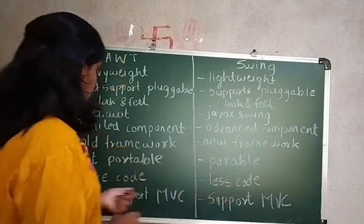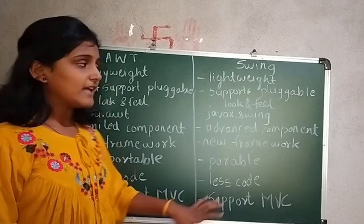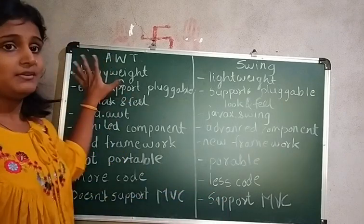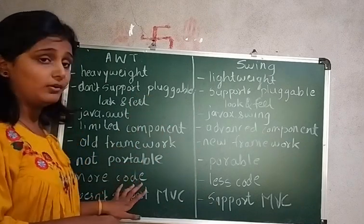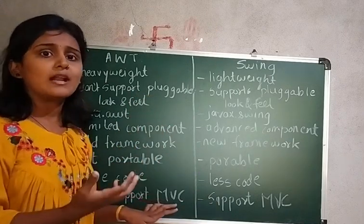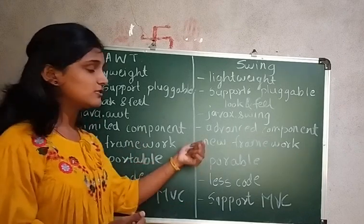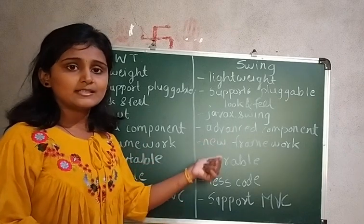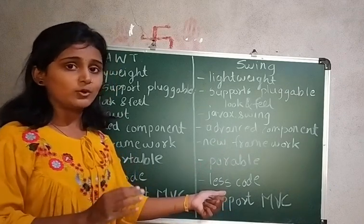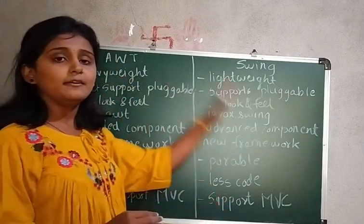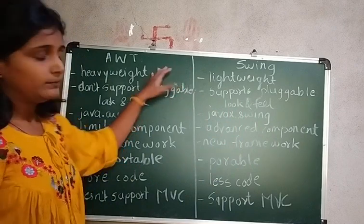The next difference is that AWT requires more code whereas Swing requires less code. Whatever programming we did in AWT required more lines and more code. In Swing we can cover the same functionality in less code, as Swing is the extended version of AWT.